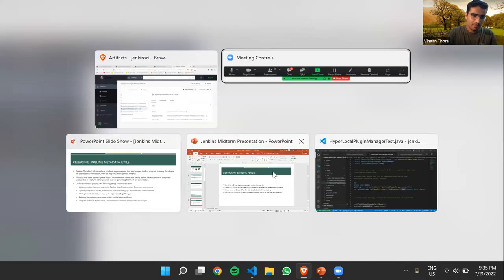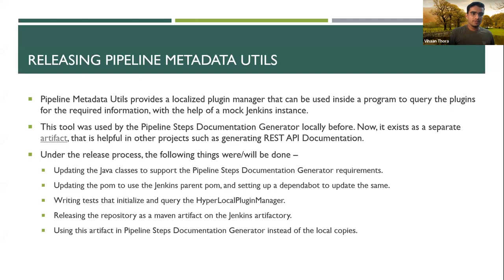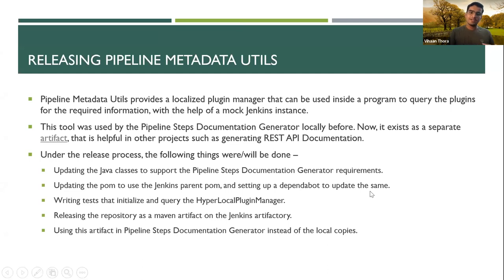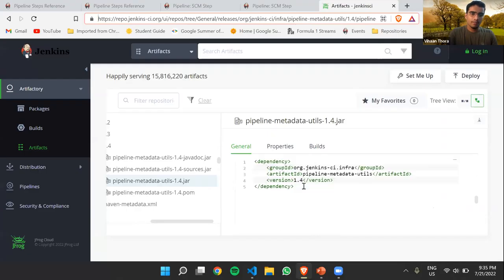For example, if you want to use it in a REST API documentation project, we can use this artifact. The plugin manager gets initialized and then we can query it the way we want. We currently only use three options for pipeline step extractor, but there are many more because the hyperlocal plugin manager inherits from the main plugin manager objectives. You can find this artifact on the Jenkins main repository. The release has been done and we're able to use it in pipeline step extractor now, removing the local dependencies and using this published version.